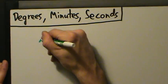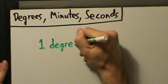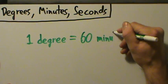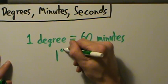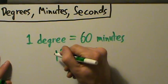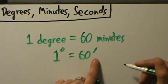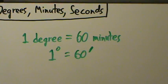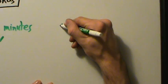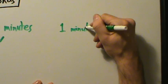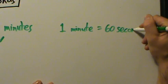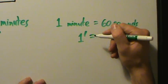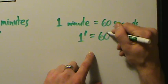First of all, one degree equals 60 minutes. Remember the notation for degrees. The shorthand notation for minutes is kind of like the shorthand for feet — it's just an apostrophe. So one degree is 60 minutes, written with a single apostrophe. And one minute is 60 seconds, where seconds are written with two apostrophes.